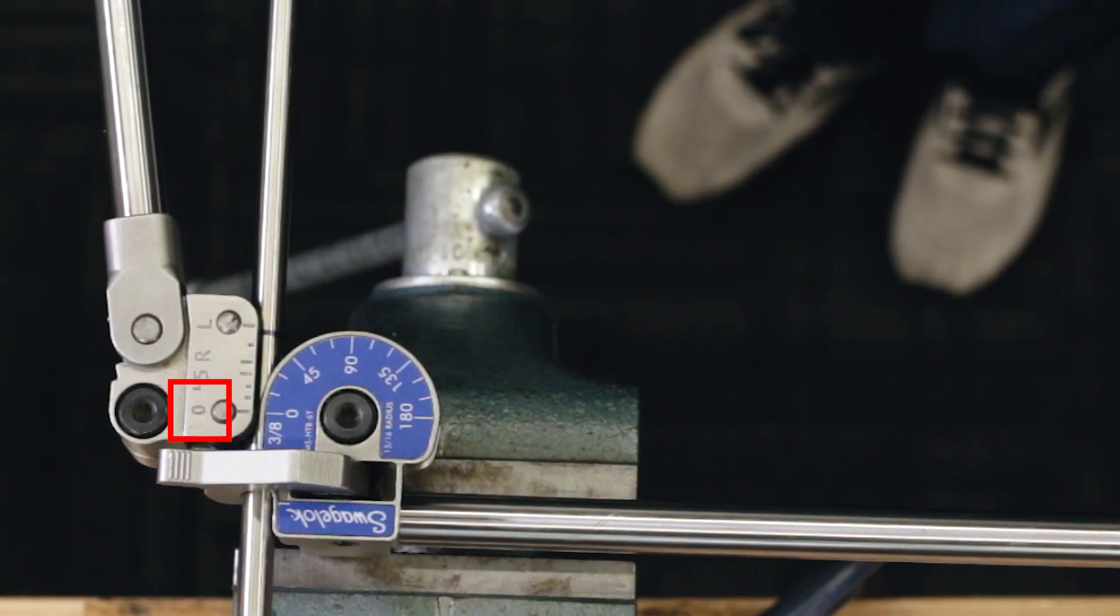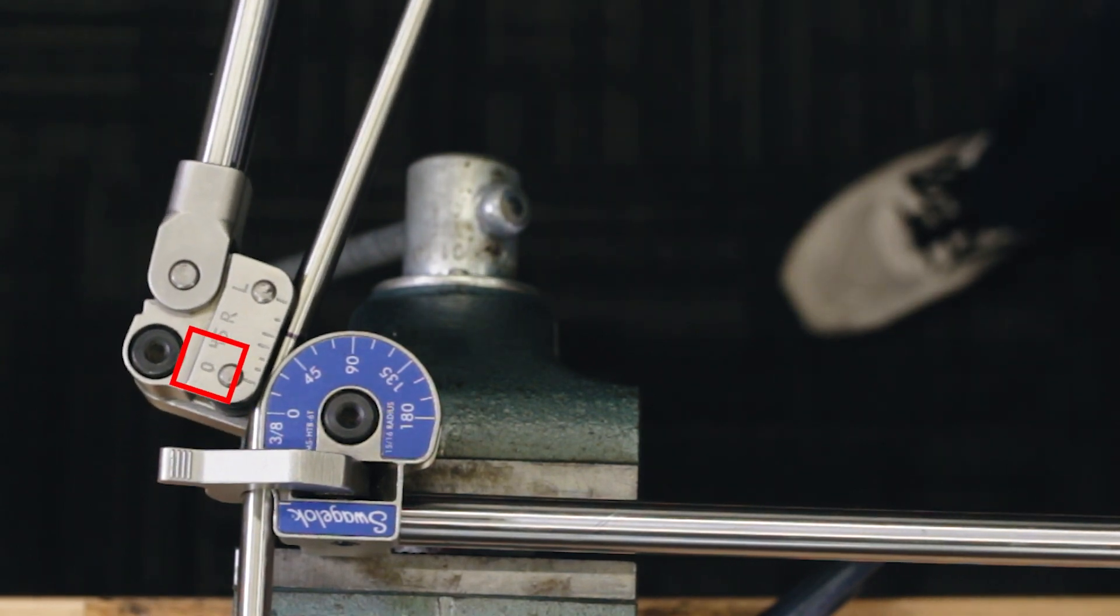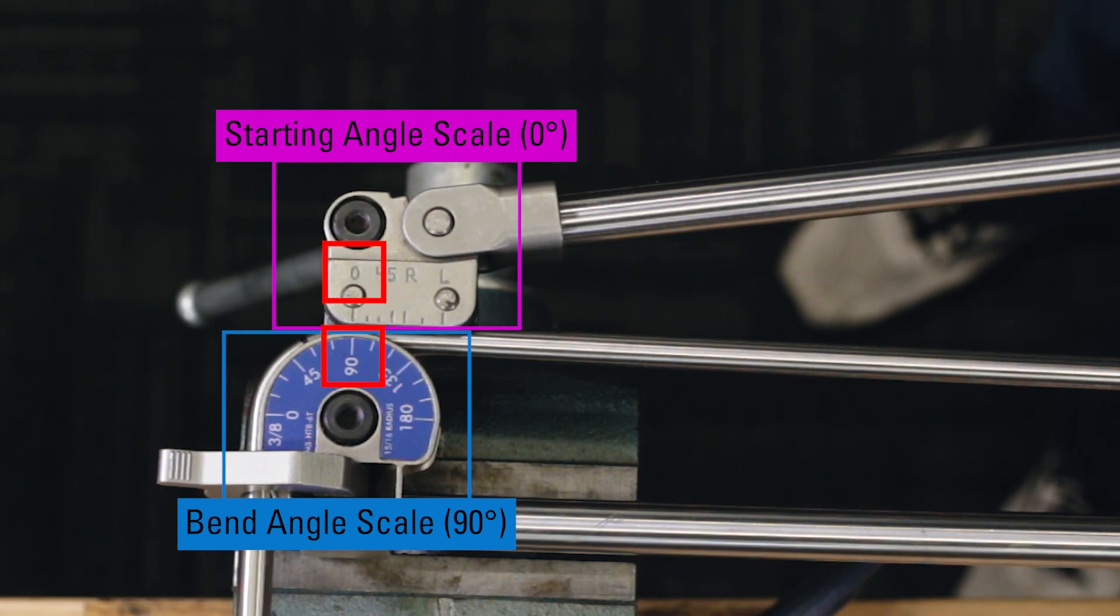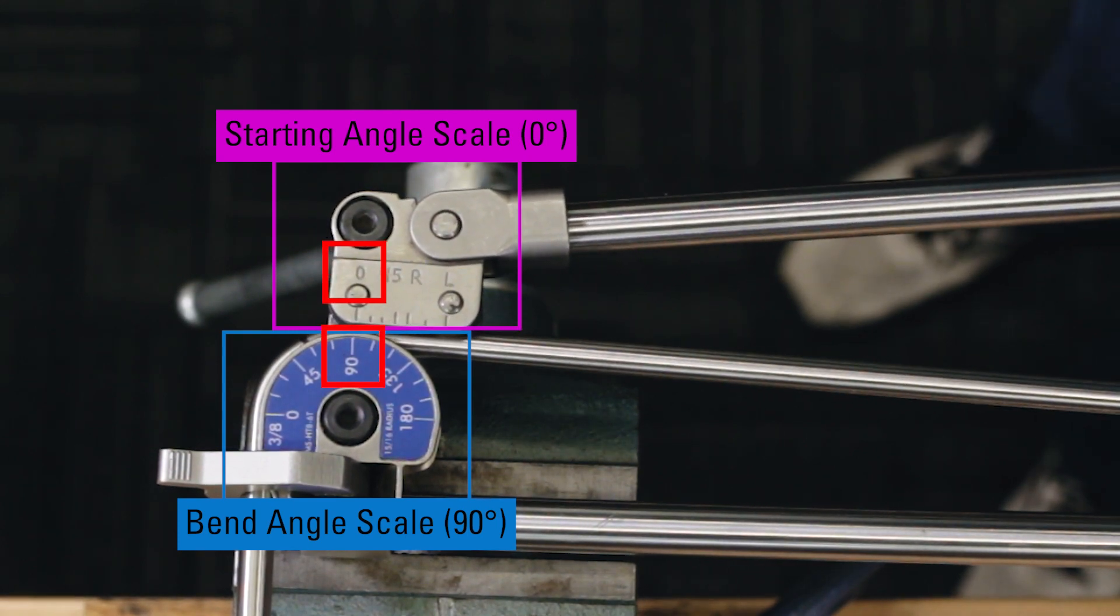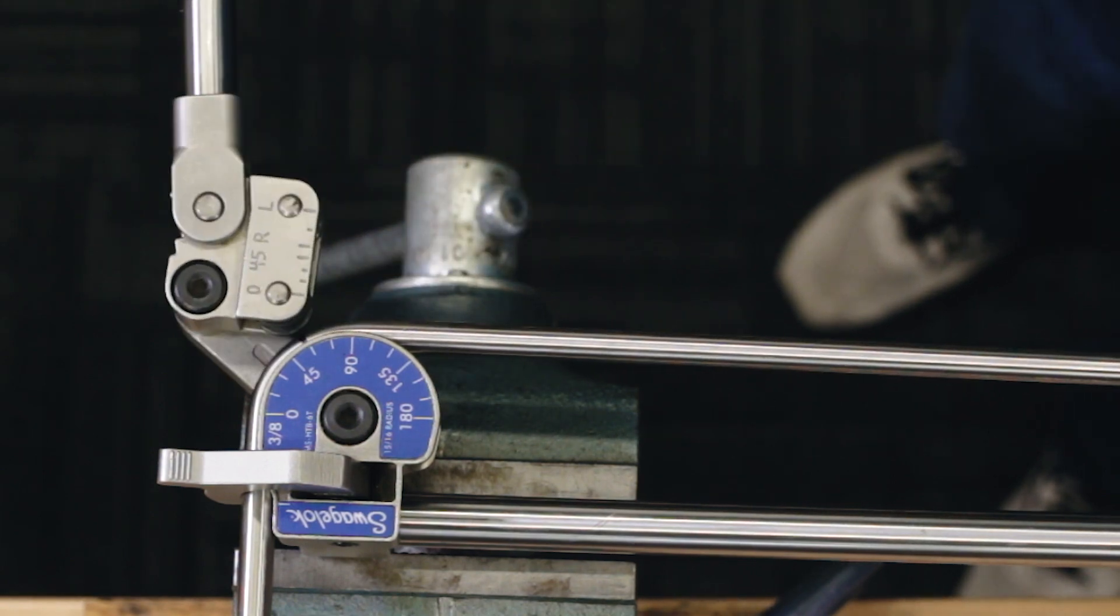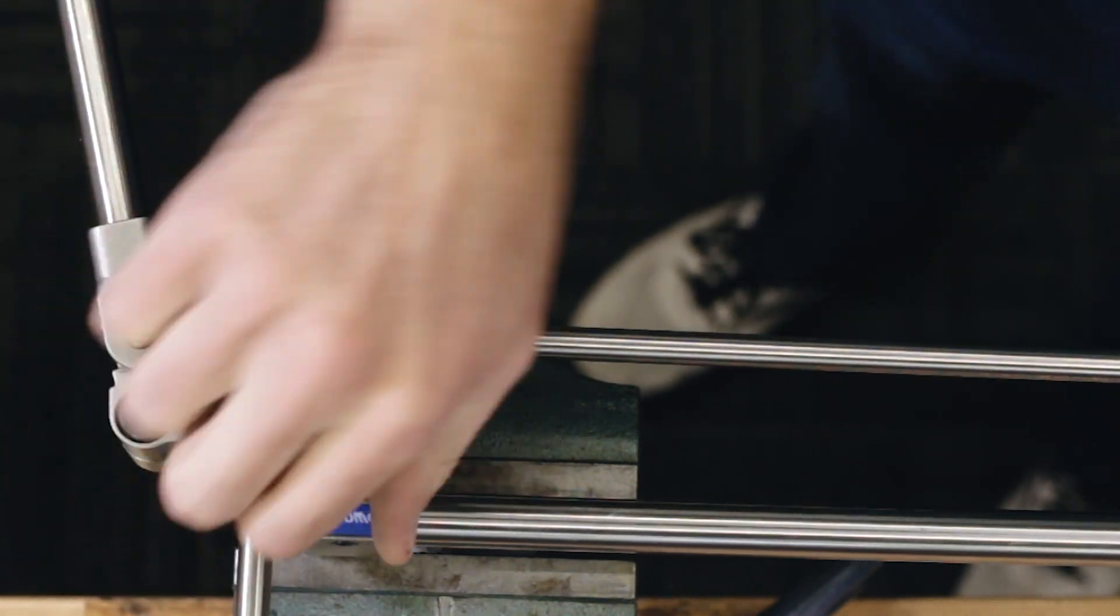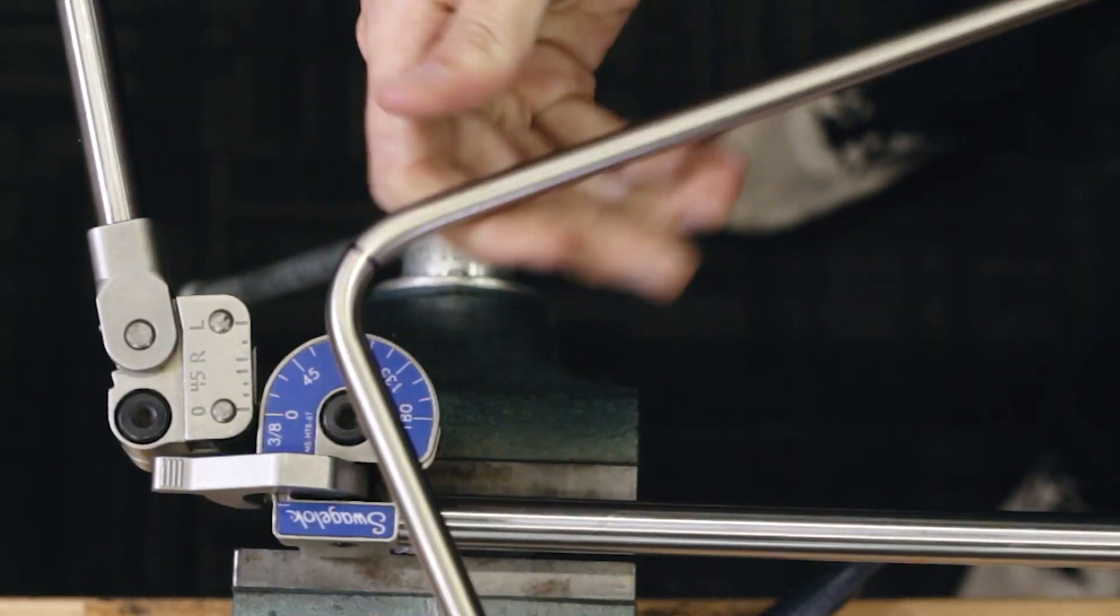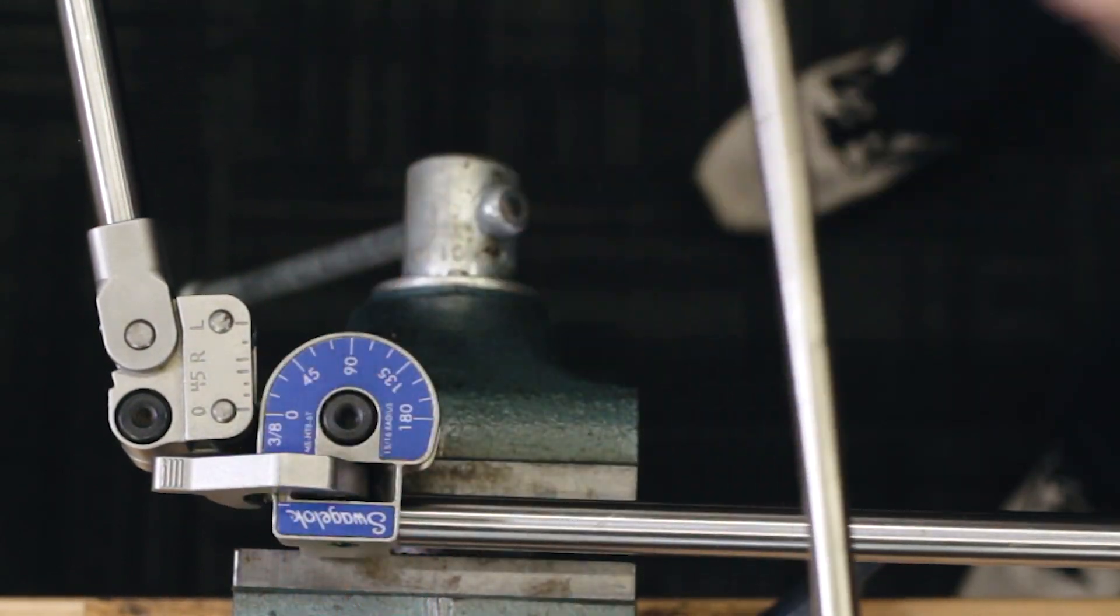The zero on the arm will be your indicator for the degree of bend you're making. Pull the arm down until you reach the 90 degree mark. You may need to bend slightly more than your target angle to compensate for angular spring back, which is how the tube will spring back a few degrees when released. Don't overbend it too far. You can always go back and add more.